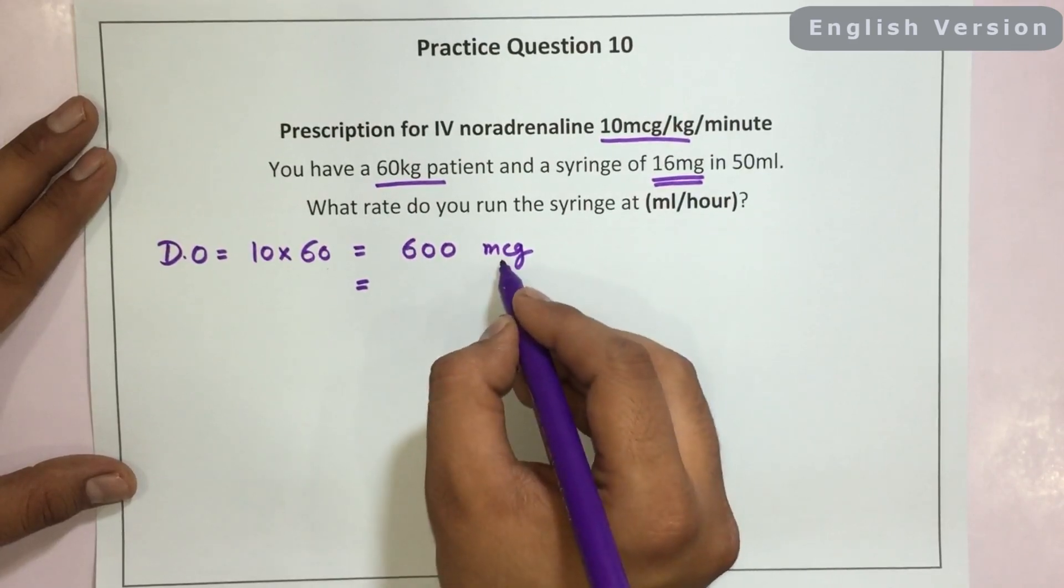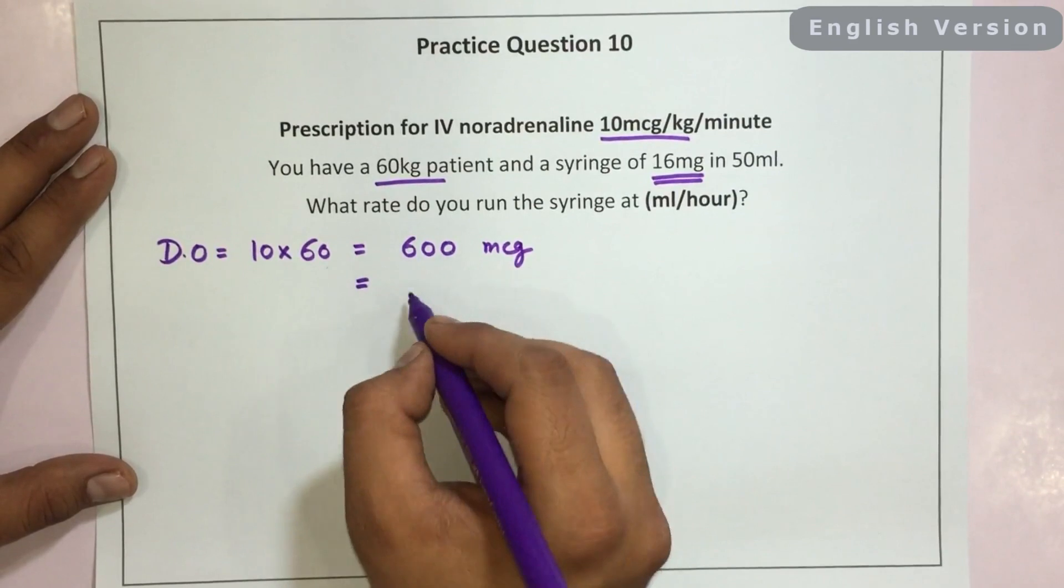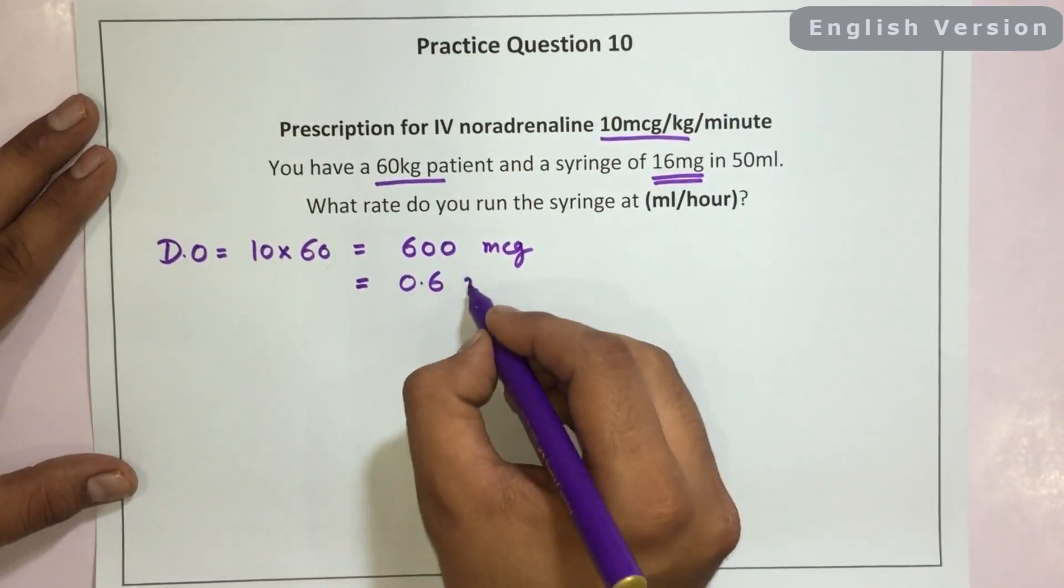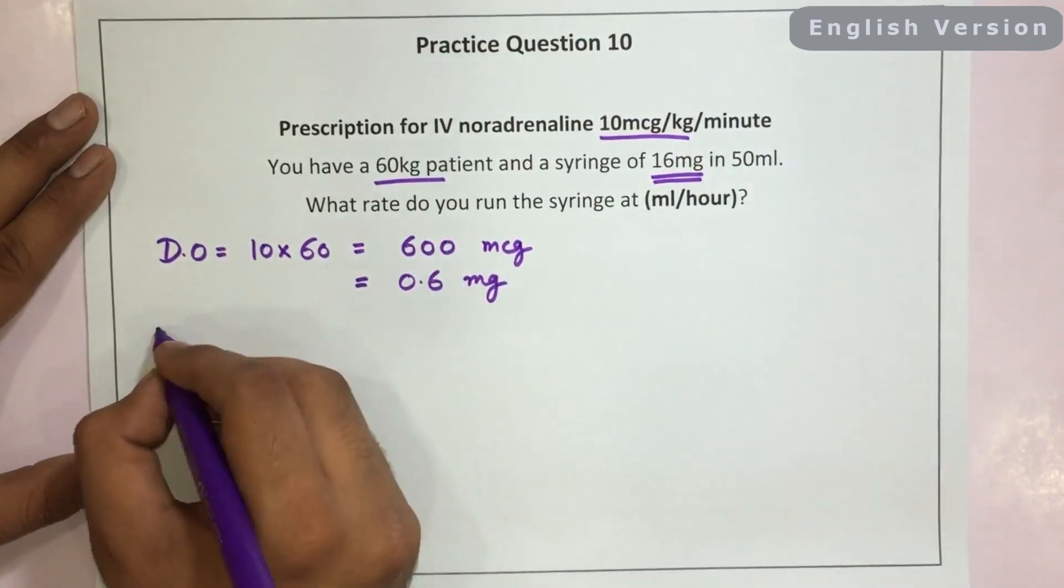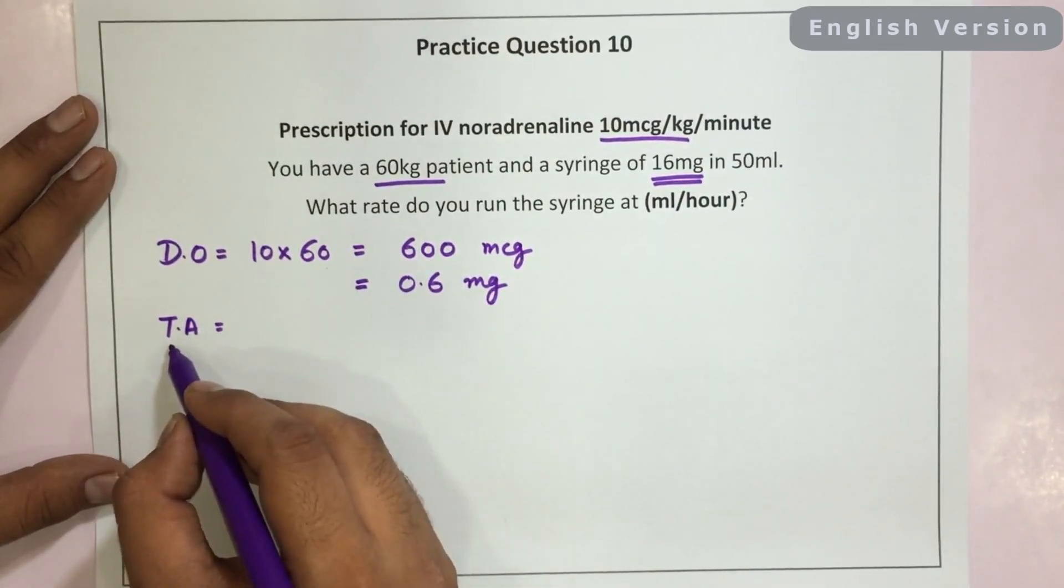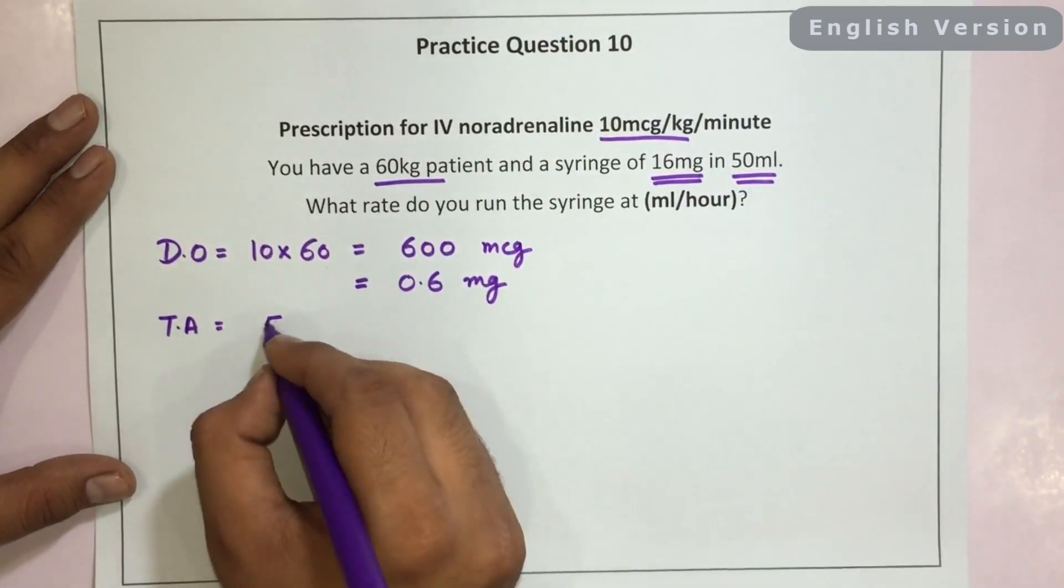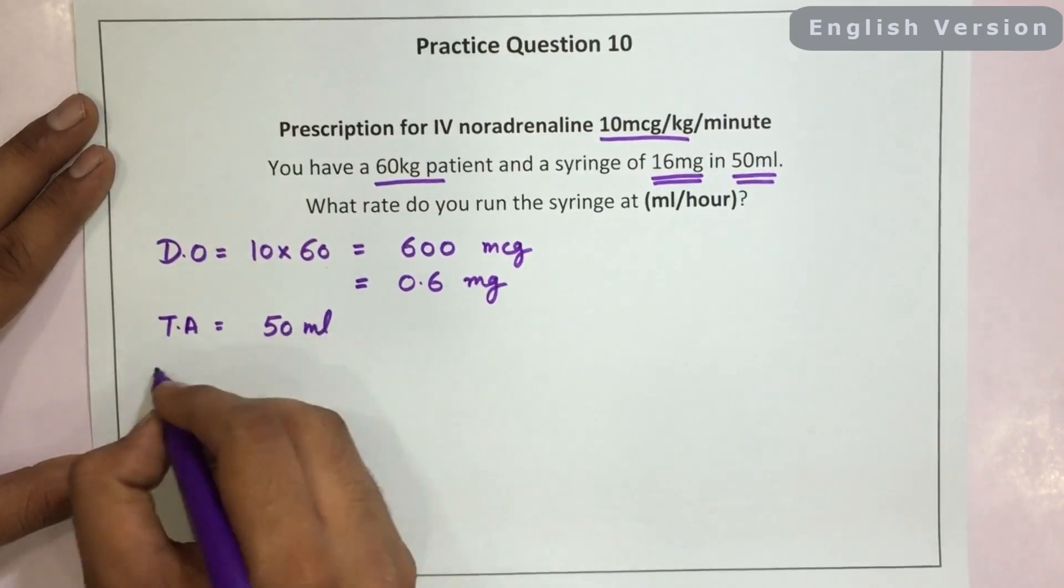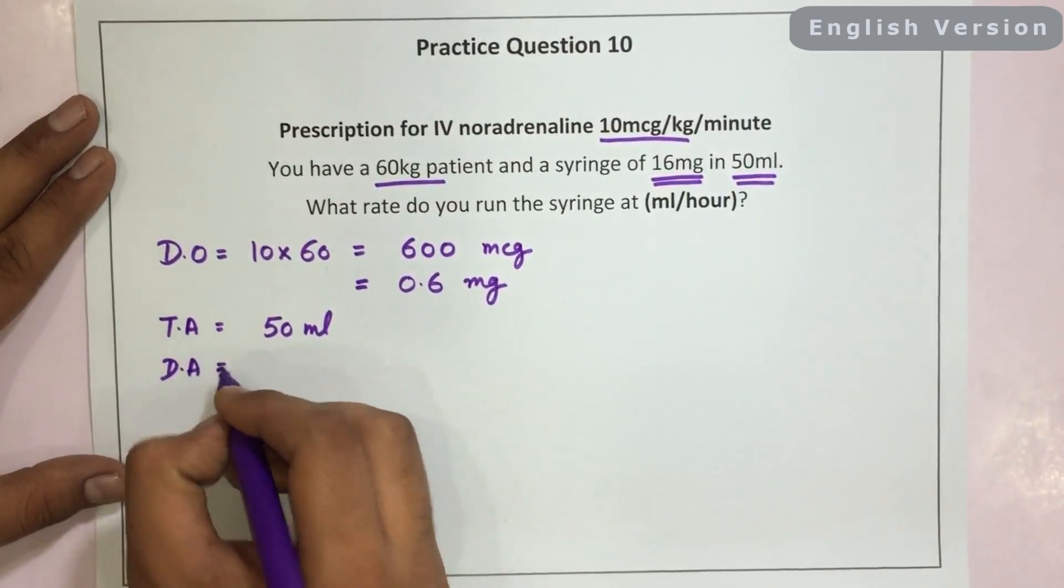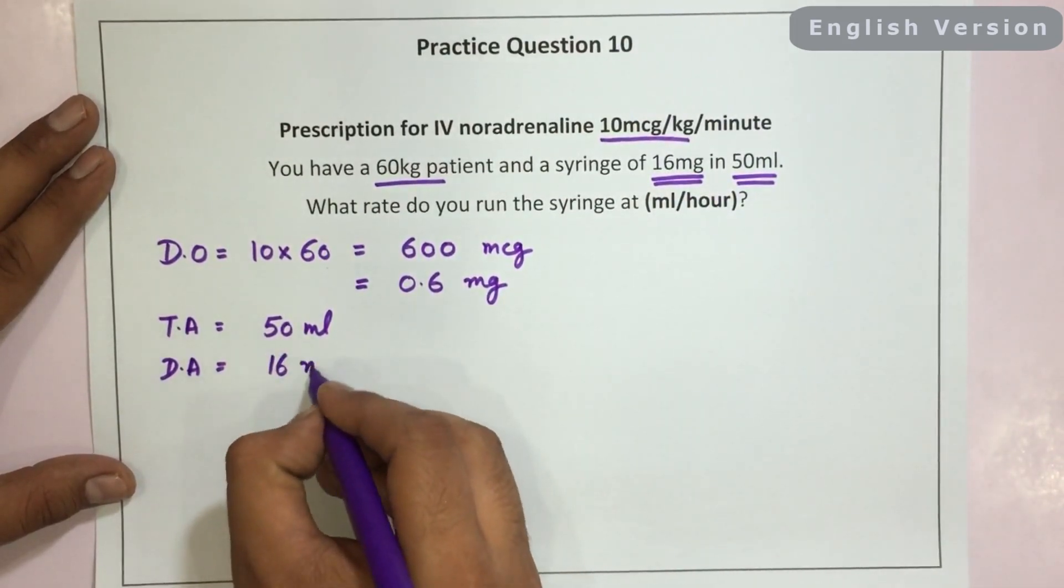When we convert microgram into milligram, we need to divide it with 1000. So it would become 0.6 milligrams. Next step would be to see what is the total amount in ampoule. Total amount in ampoule is 50 ml. Third step would be to see what is the dose in ampoule. The dose in ampoule is 16 mg.